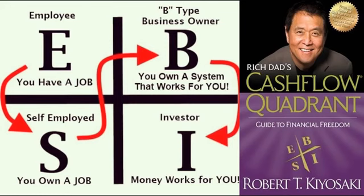Rich Dad's Cash Flow Quadrant represents the different methods by which income or money is generated. An employee earns money by holding a job and working for someone else or a company. Self-employed people earn money working for themselves. A business owner owns a business that generates money, and investors earn money from their various investments — in other words, money generating more money. Different methods of income generation require different frames of mind, different technical skills, different educational paths, and different types of people. Different people are attracted to different quadrants. Which quadrant you or I choose to earn our primary income from is not so much what we learned in school — it is more about who we are at the core: our core values, strengths, weaknesses, and interests.